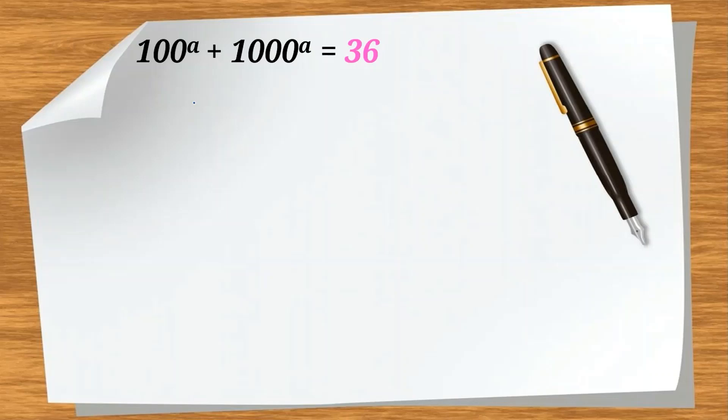If you pay attention, 100 and 1000 are powers of 10, so we can write 10 squared instead of 100, and instead of 1000, we can write 10 cubed to the A equals 36.